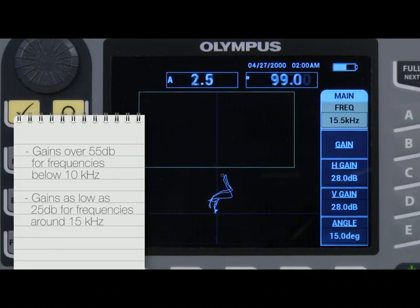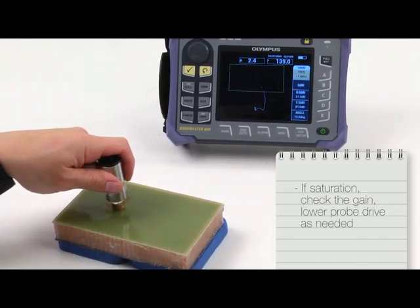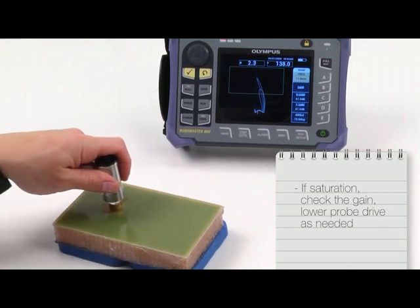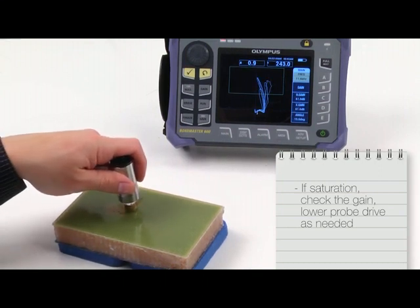Be aware that gains over 55 dB may be needed at frequencies below 10 kHz, but gains as low as 25 dB may be required at frequencies around 15 kHz. In summary, if you observe or suspect saturation, remember to check the gain and possibly lower the probe drive as needed.